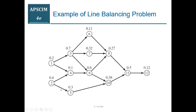This is a graphical representation of all operations. Through this you can easily see the sequence. For example, operation 10 cannot start unless operations 8 and 5 are completed. Operation 8 cannot start before operations 3 or 4, and operation 5 cannot be assigned before operation 2. These arrows show the dependencies of operations on other operations.